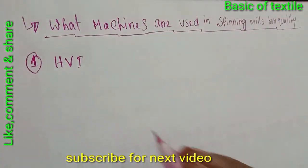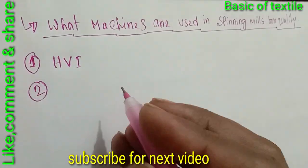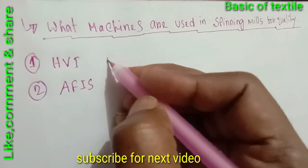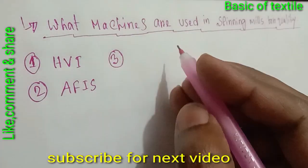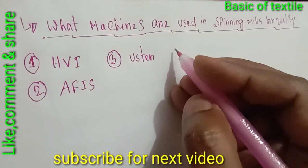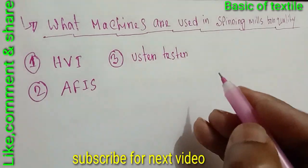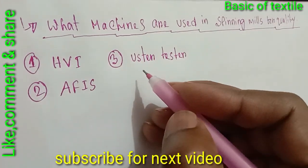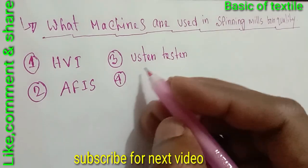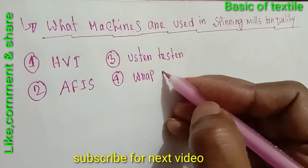Number one: HVI. Number two: AFIS. Number three: Uster Tester. Number four: Red Block.